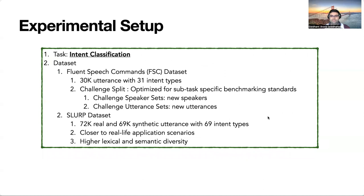We evaluate our proposed approach on publicly available SLU datasets: the Fluent Speech Commands (FSC) dataset and the Slurp dataset. FSC is a reasonably large SLU dataset containing around 30,000 utterances with 31 intent types. For FSC, we use the challenge test set with held-out speakers and held-out utterances. Slurp contains 72,000 real and 69,000 synthetic utterances of single-turn user conversations with a home assistant, includes 69 intent types, and has much higher lexical and semantic diversity than most publicly available SLU datasets.